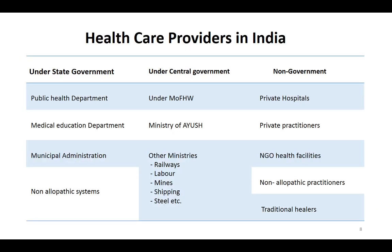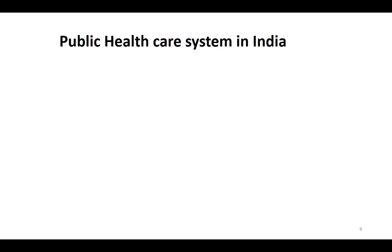Healthcare providers in India can be divided into state government, central government, and non-government. Under the state government: public health department, medical education department, municipal administration, and non-allopathic systems. Under the central government: Ministry of Health and Family Welfare, Ministry of AYUSH, and other ministries like railways, labor, mines, and shipping. Non-government includes private hospitals, private practitioners, and NGOs.